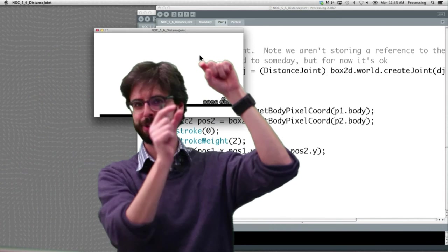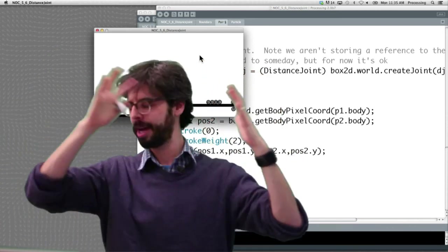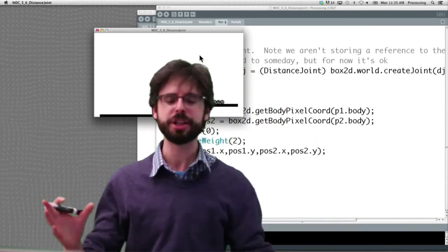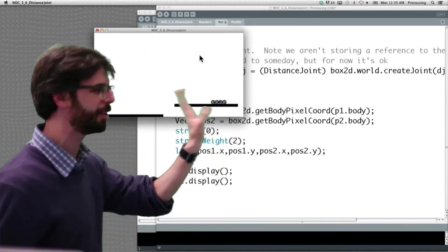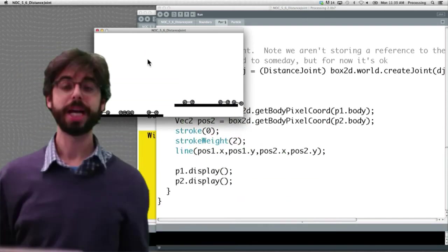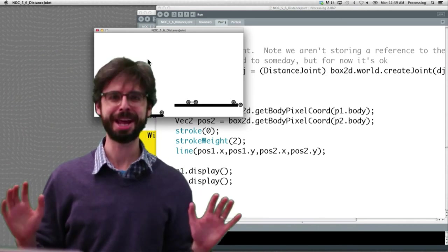Try to create a string of things connected. Try to make a mesh of stuff connected. Use the distance joint in a different way than just this simple example. That would be an exercise. Okay, let's look at a revolute joint in the next video.